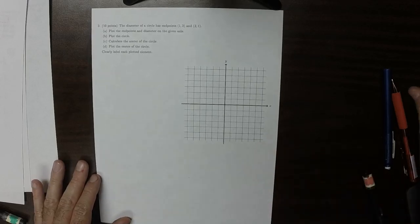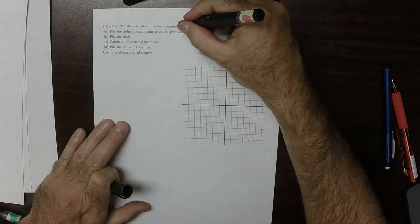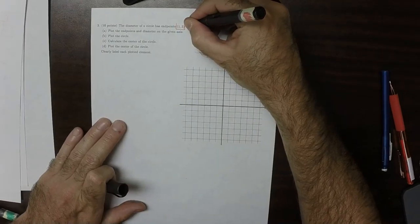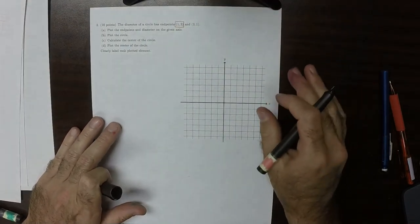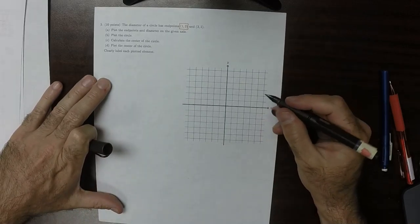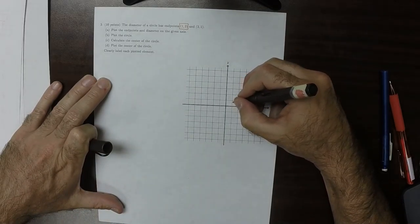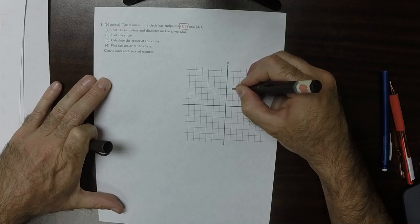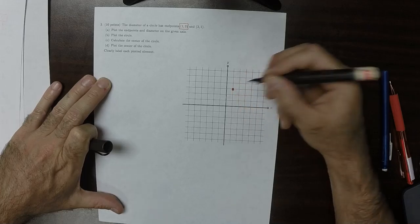OK, so plot the endpoints. OK, so then I'll call this one the red point. So 1, 3. So 1, 3. So 1, and then 3. Red point.